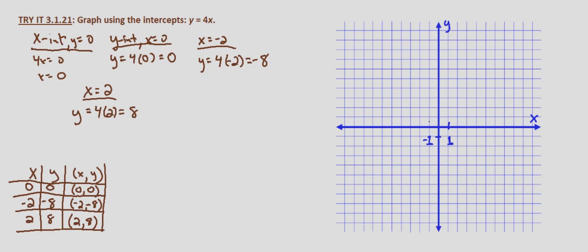Now we simply plot our points. So negative 2, negative 8. Negative 1, 2, 3, 4, 5, 6, 7, 8. Zero, zero - it goes through the origin. And at 2, 1, 2, 3, 4, 5, 6, 7, 8.